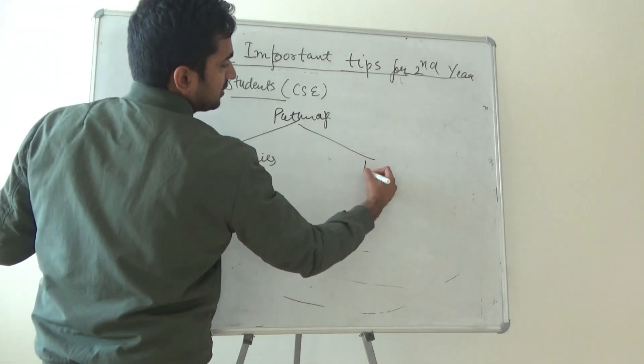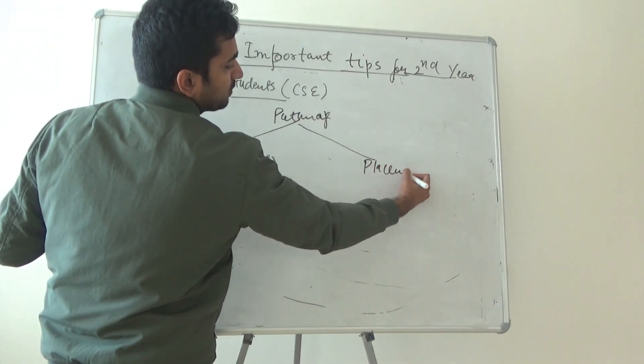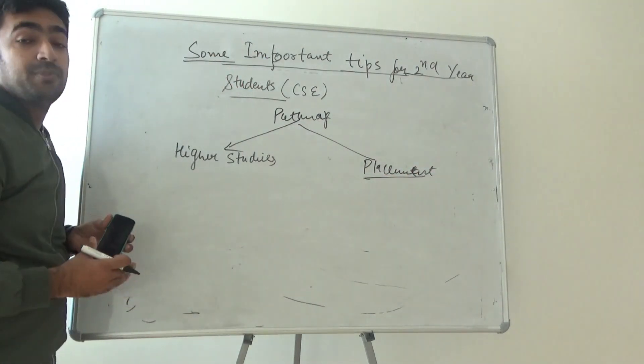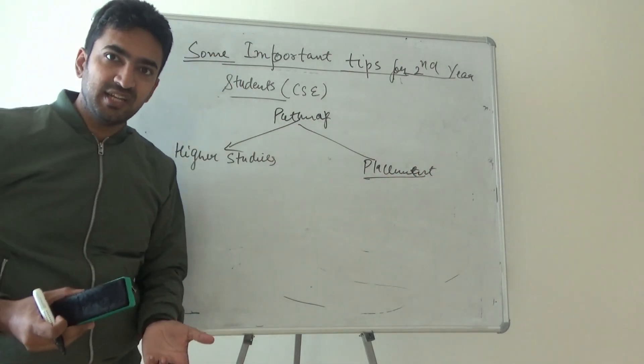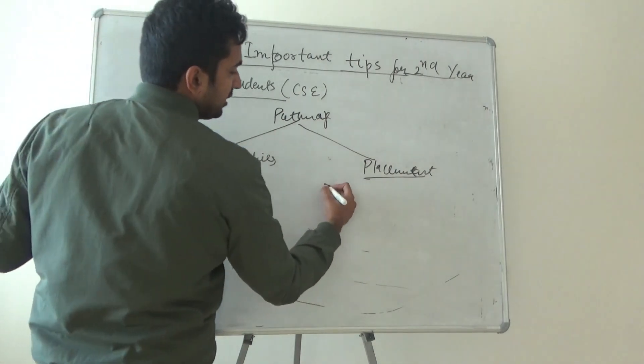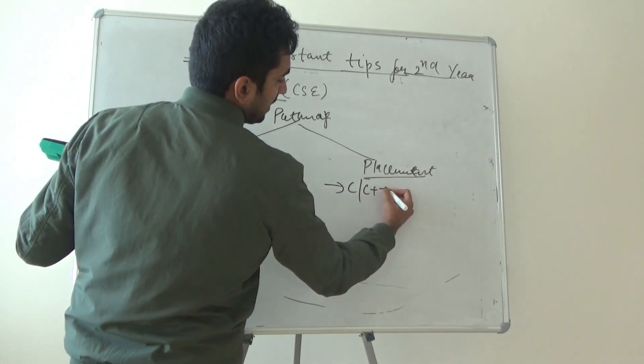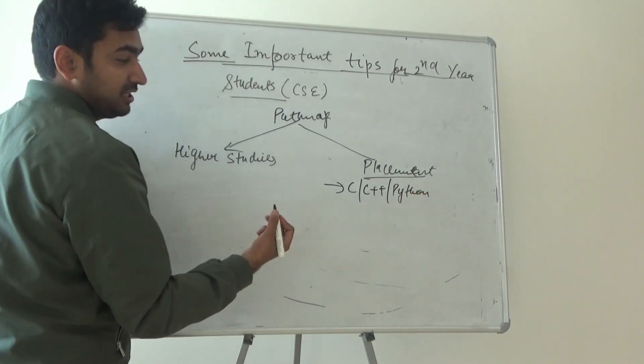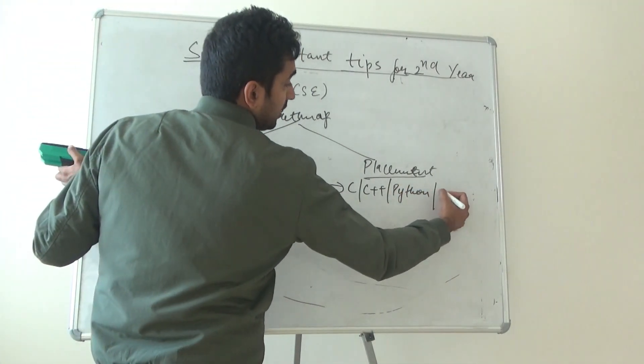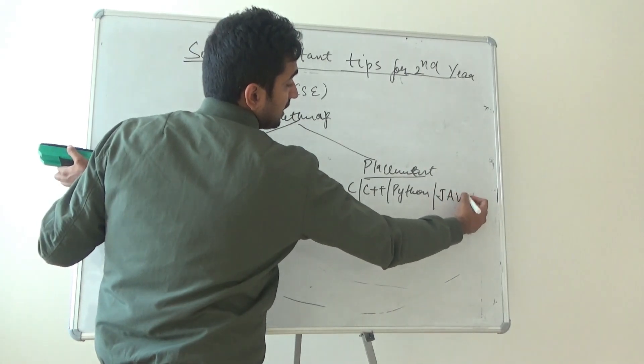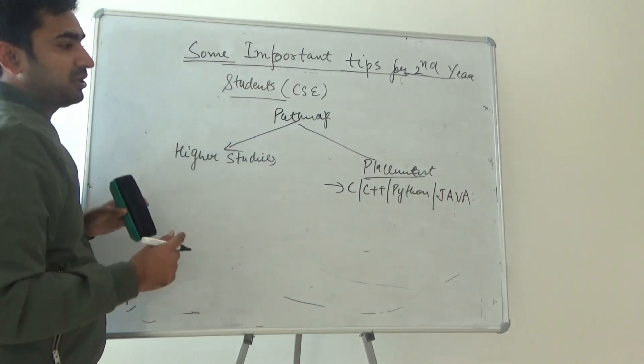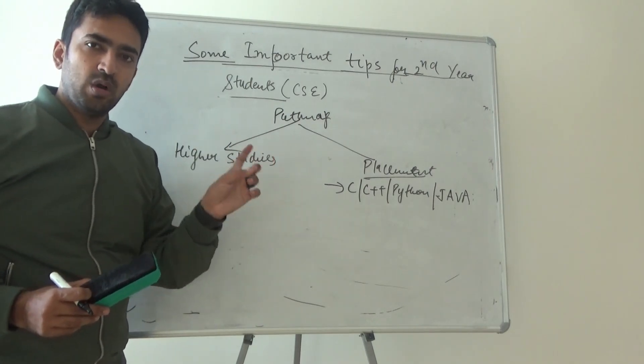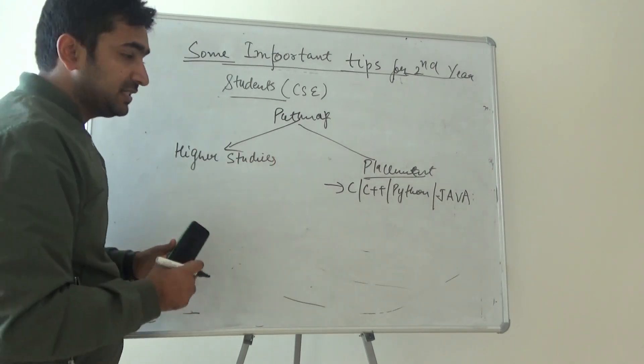The other pathway, which most students choose, is placement. For placement-oriented subjects, you must have good knowledge of C language, C++, Python—you might be studying that in second or first year—as well as Java. These are four very important subjects you should have good knowledge of when you are applying for placements.